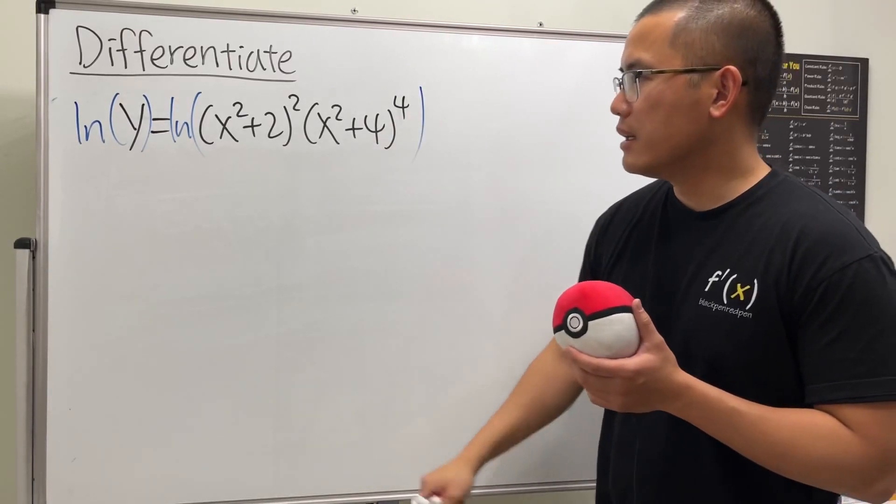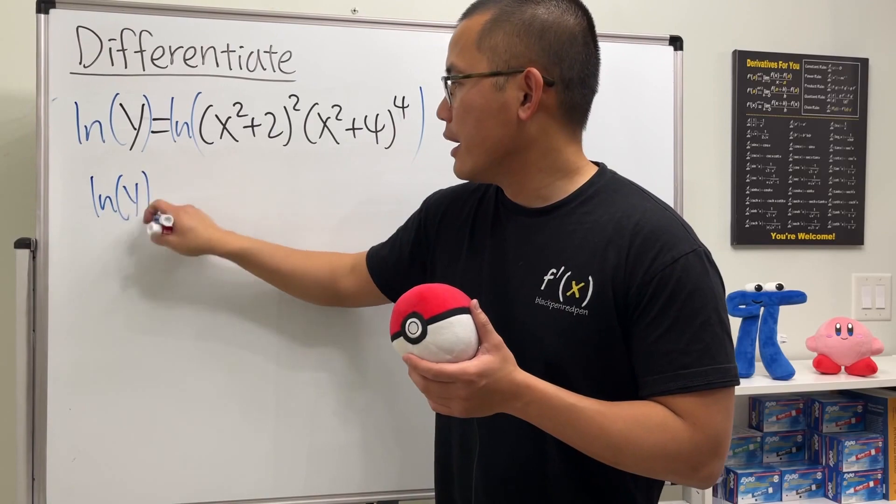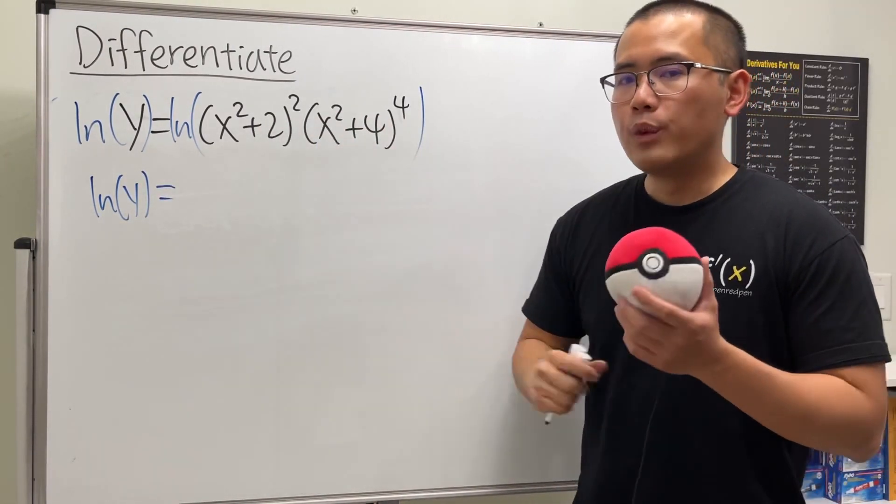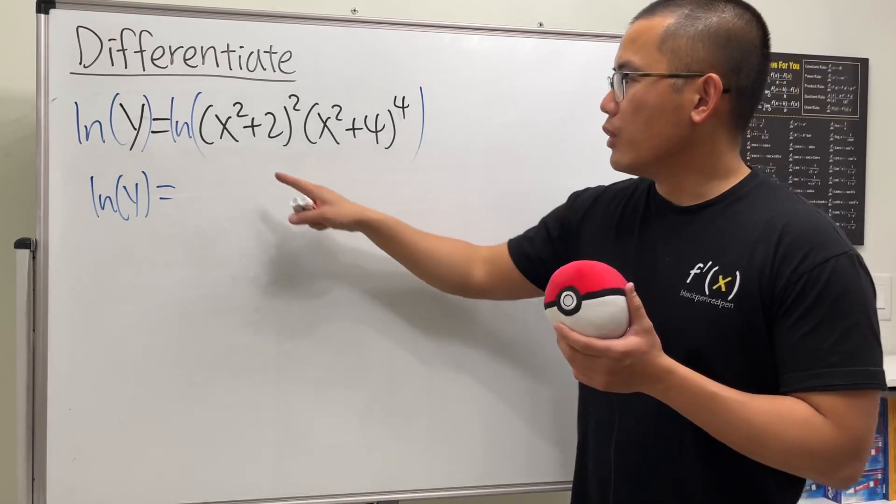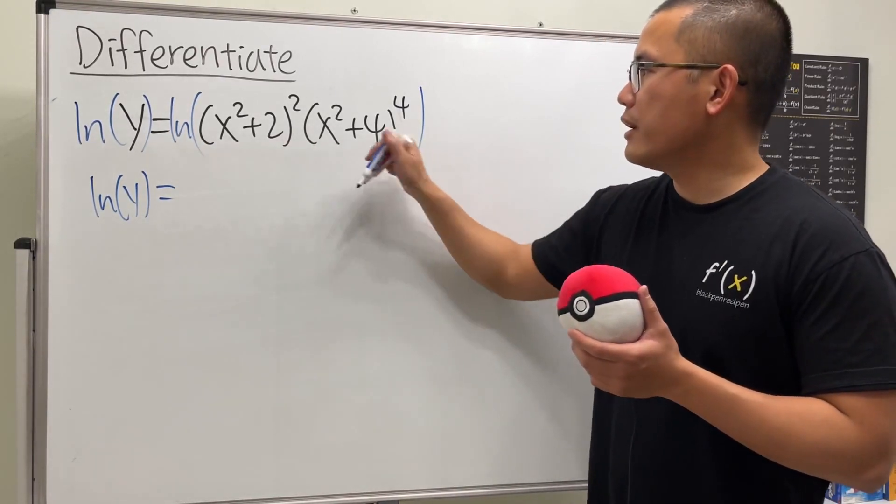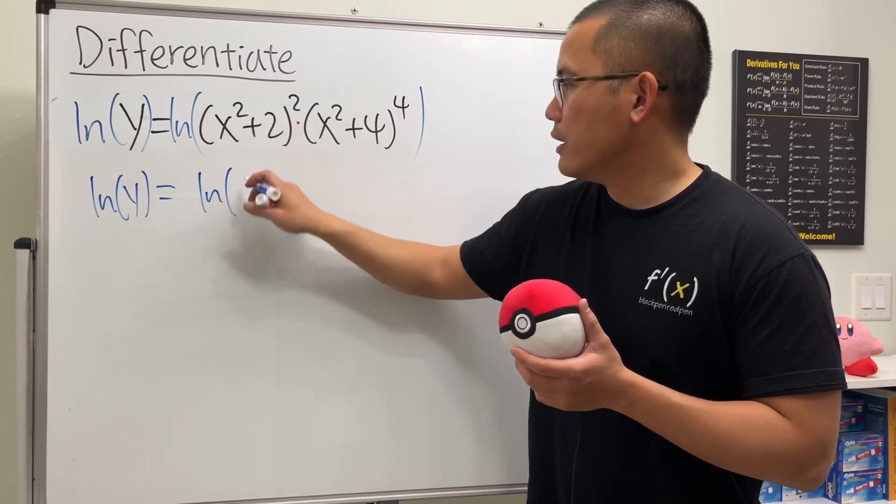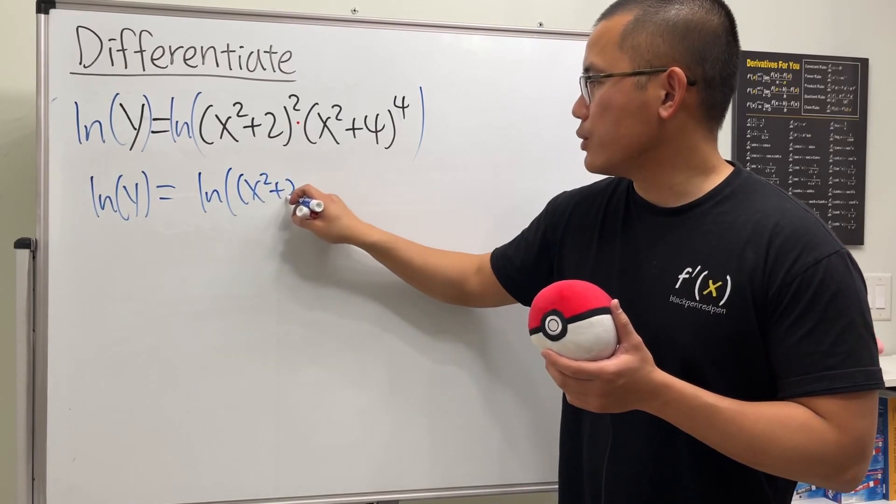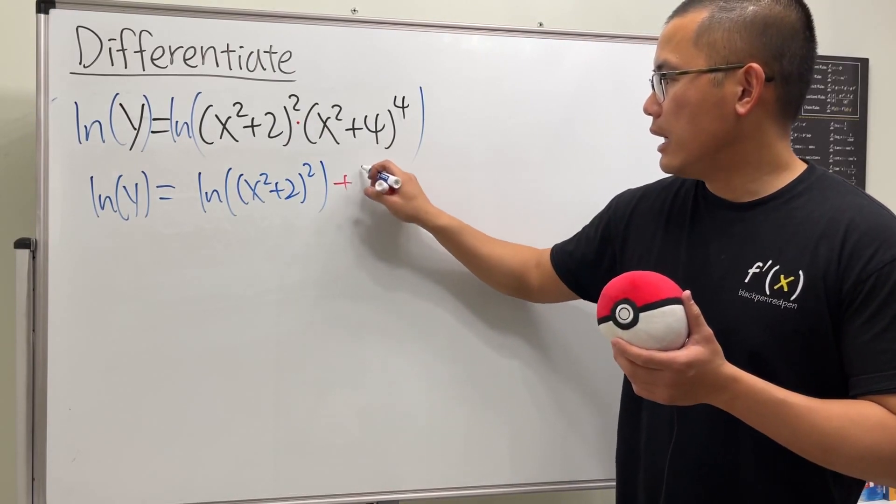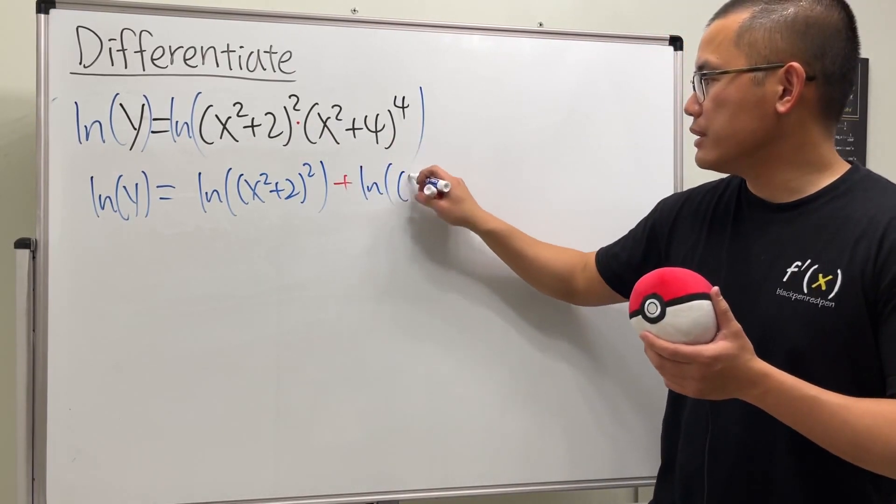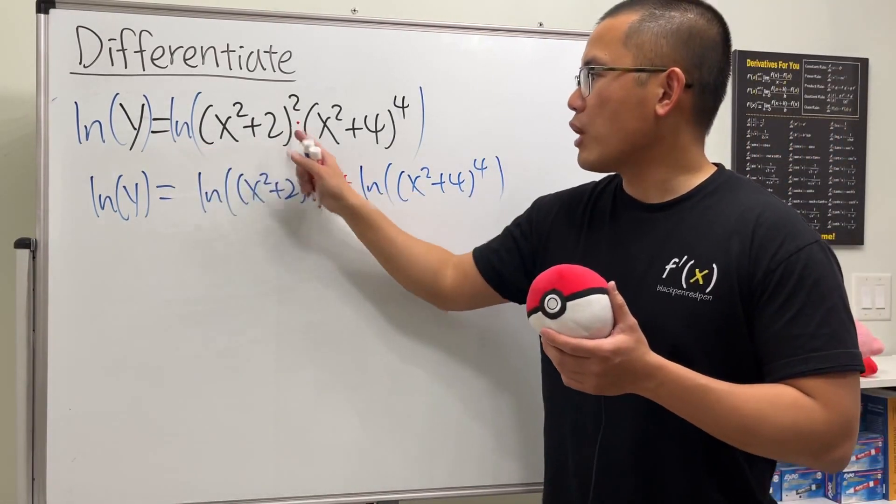And the reason that we want to do that is because we will see the left hand side is just natural log of y, and the beauty is that on the right hand side we can use the log properties to break this apart. So first let's take a look at this right here as a product, so we know we can just bring this as ln(x² + 2)² - so this is the first part - and we will add ln of (x² + 4) raised to the fourth power. ln of a product is the sum of these two ln's.